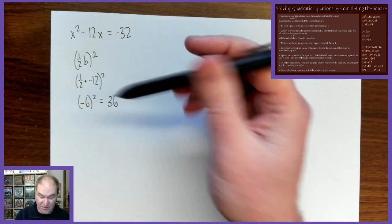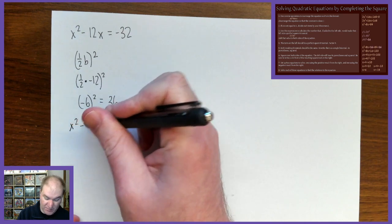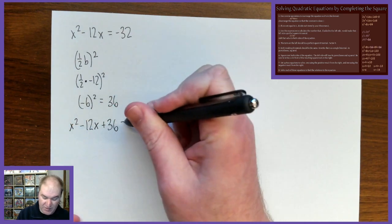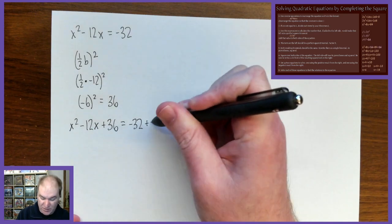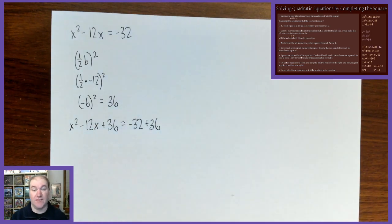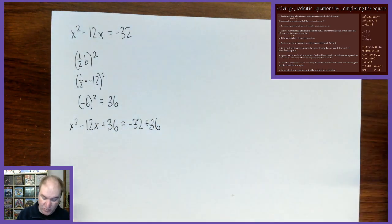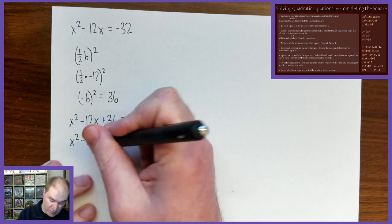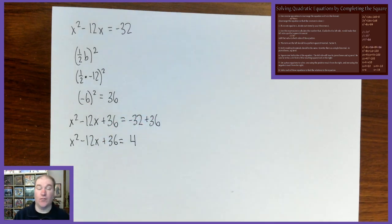Now it says add this value to both sides. So the equation becomes x squared minus 12x plus 36 equals negative 32 plus 36. Negative 32 plus 36 simplifies to positive 4.